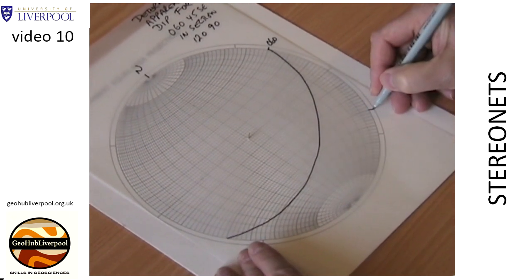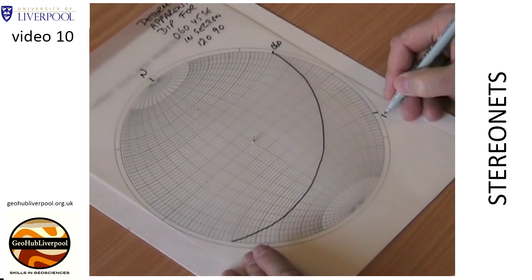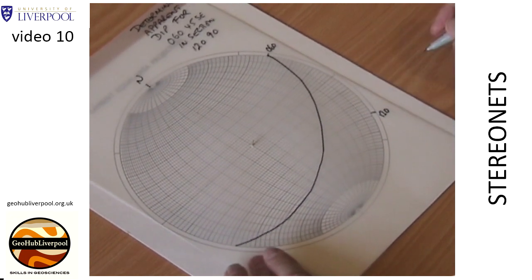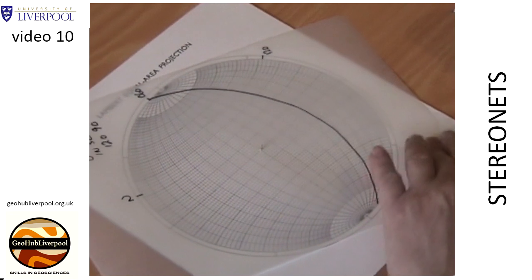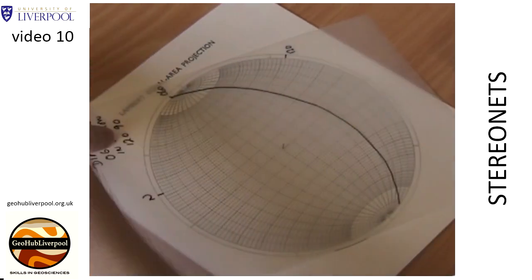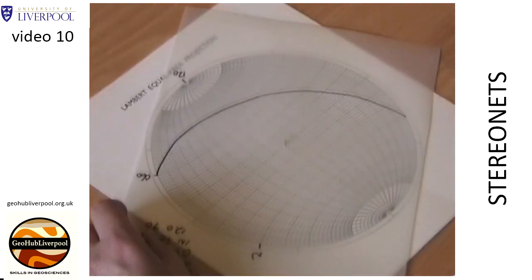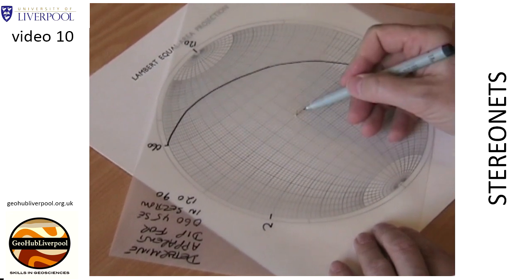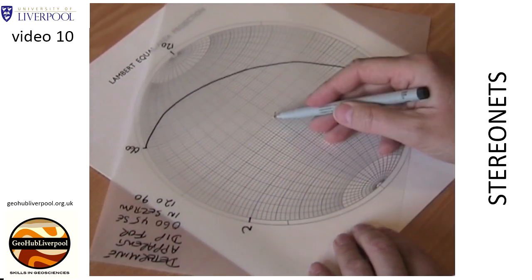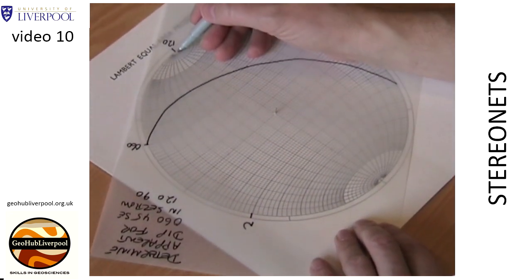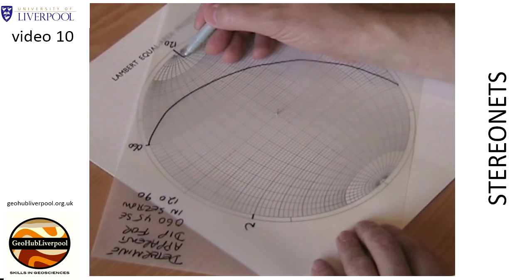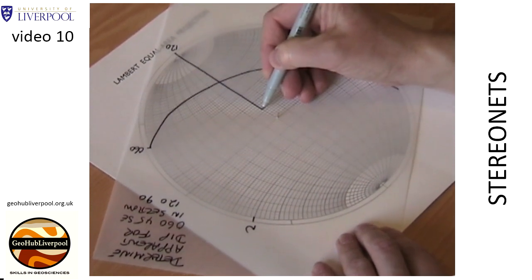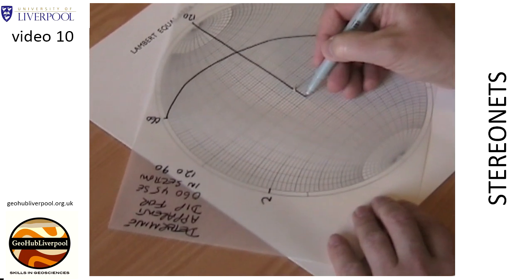Mark on the tracing paper the strike of the line of section. Rotate the tracing paper so that this mark lies on the north pole of the stereonet. The section is vertical, so the great circle that represents this plane lies along the north-south line. Hold the tracing paper in place and draw in the great circle.